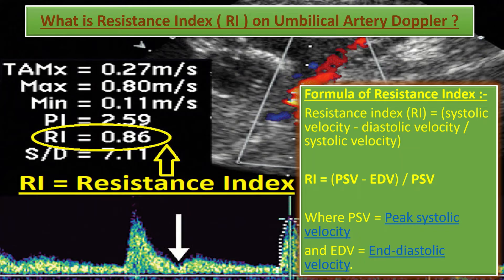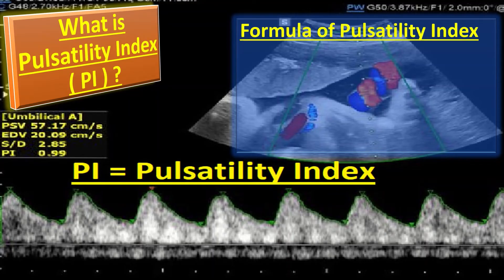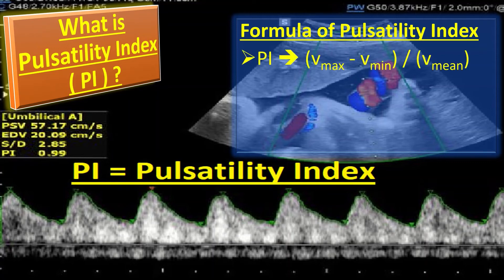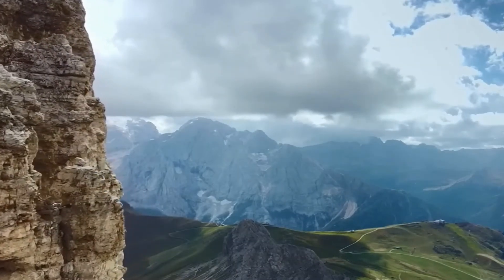What is the pulsatility index? The pulsatility index, also called the Gosling index, is a calculated flow parameter in ultrasound derived from the minimum, maximum, and mean Doppler frequency shift during a defined cardiac cycle. Along with the resistance index, it is typically used to assess resistance in a pulsatile vascular system. The formula is: PI = (V max − V minimum) / V mean, or equivalently, PI = (Peak Systolic Velocity − Minimal Diastolic Velocity) / Mean Velocity.